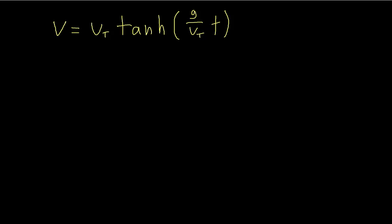Now the next thing to do is integrate again to get the position function. And so to integrate hyperbolic tangent, all you have to do is remember that it's really just hyperbolic sine divided by hyperbolic cosine.